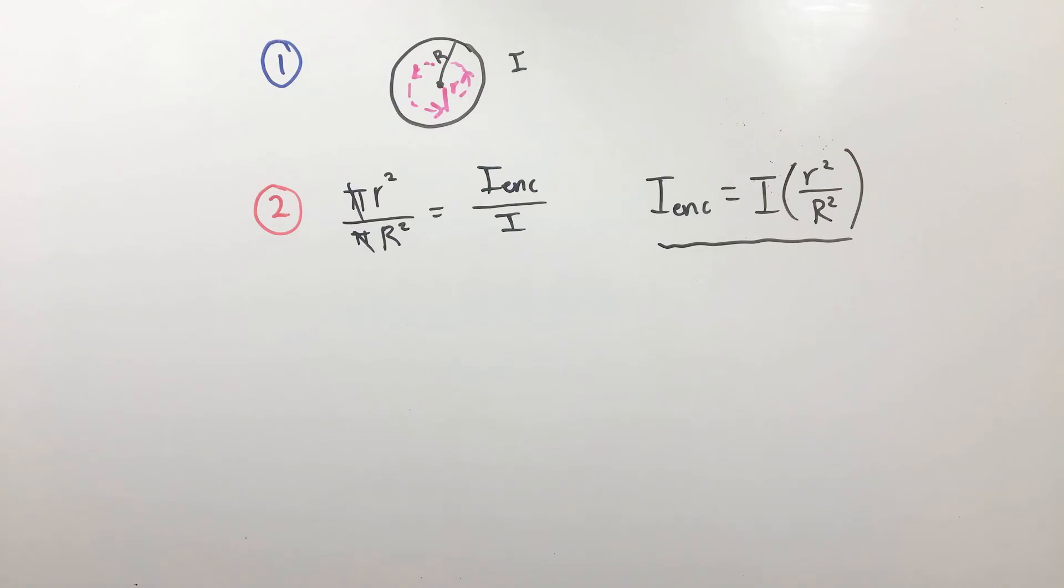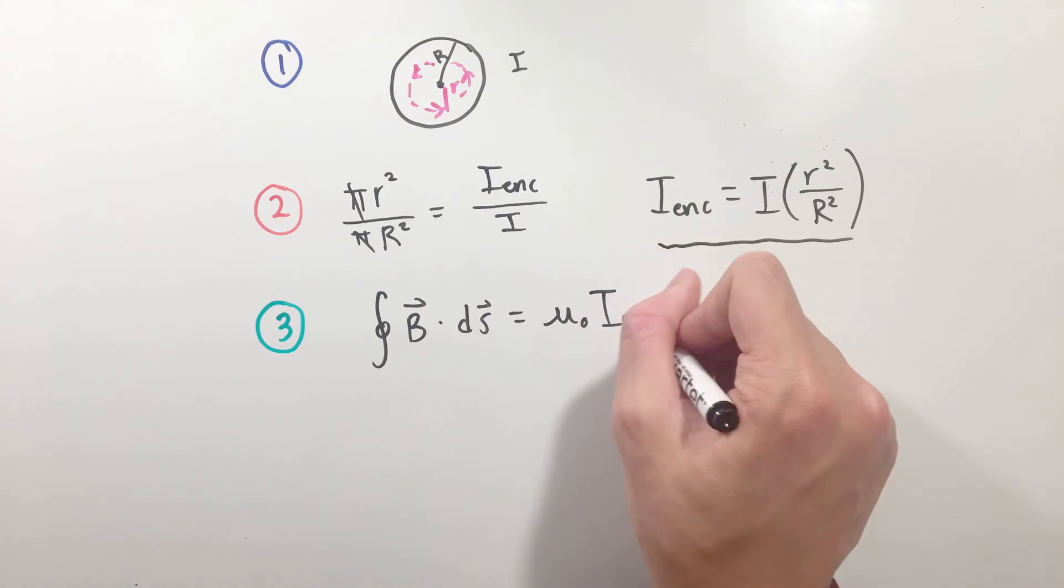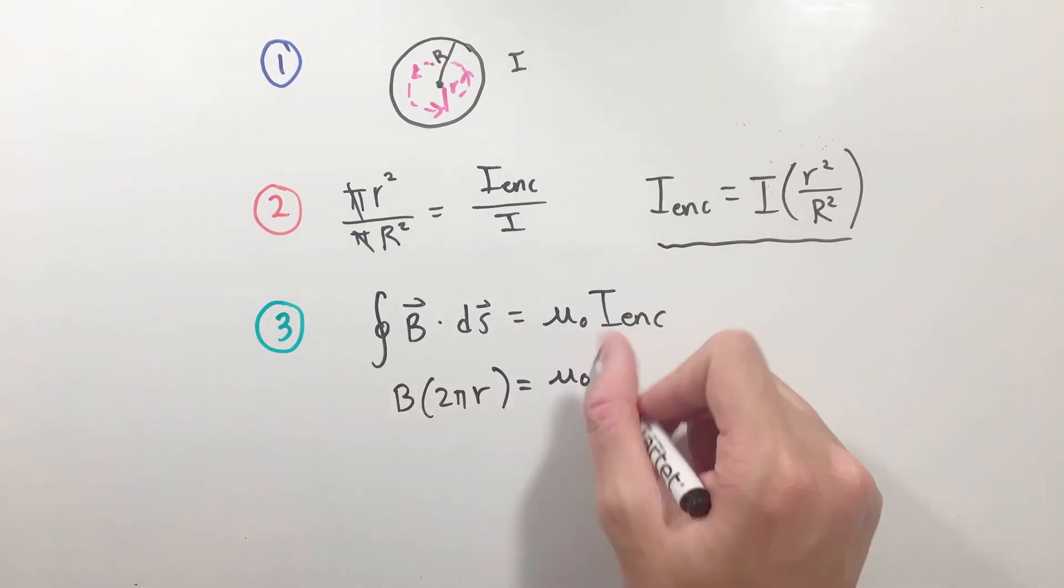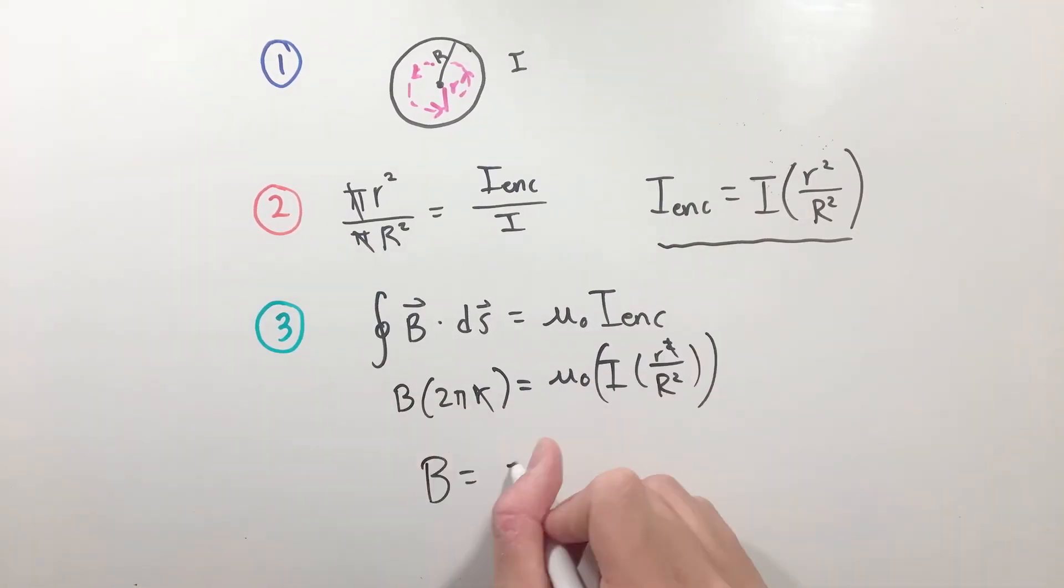Finally, just as with the case outside of the wire, let's apply Ampere's law. Since intuitively, the magnetic field will still be circularly uniform and point in the same direction as before, we can apply the exact same simplifications to find the magnetic field inside of a current-carrying wire.